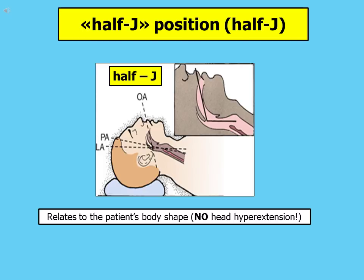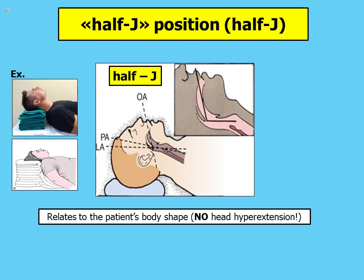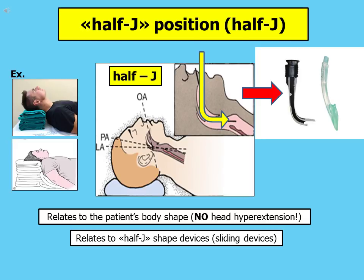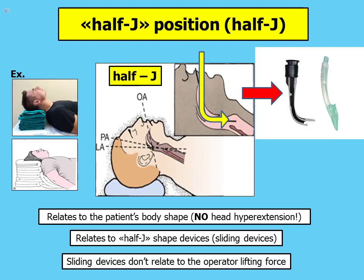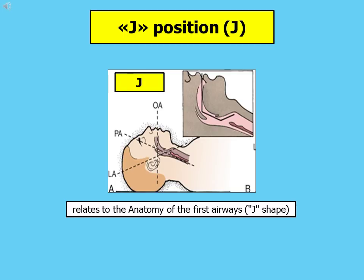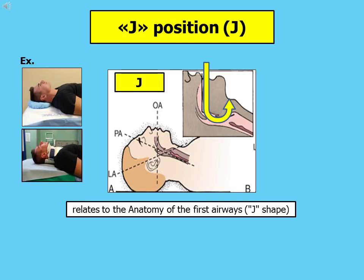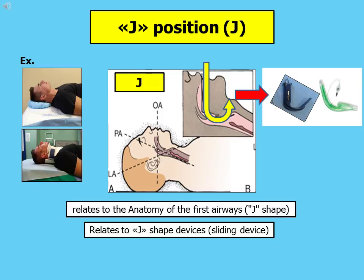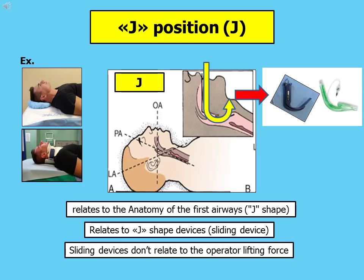Half-J position also relates to the patient's body shape, but you should increase the thickness of the pillow until the level at which there will be no possibility to obtain head hyperextension. Half-J position relates to half-J shape devices — both video laryngoscopes and supraglottic devices. Half-J shape devices are sliding devices and don't relate to your lifting force. J position relates to the anatomical curve of the proximal airways, which has a J shape, and relates to J-shape airway management devices — both video laryngoscopes and supraglottic devices. J-shape devices are also sliding devices and don't need your lifting force.